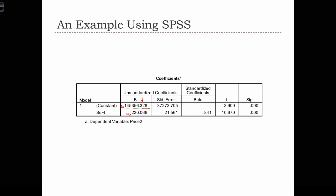So in this case, we have price equals 145,356 plus 230 times square feet. So this square feet is our x variable, and price is our y variable.